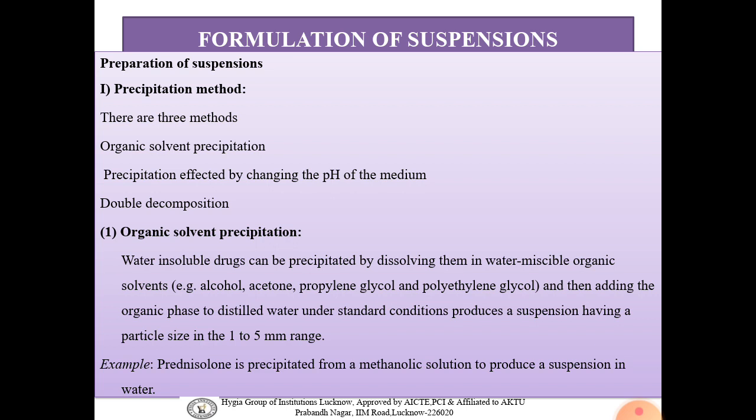Organic solvent precipitation: water-insoluble drugs can be precipitated by dissolving them in water-miscible organic solvents such as alcohol, acetone, propylene glycol, or polyethylene glycol. The organic phase is then added to distilled water under standard conditions to produce a suspension having particle size in the range of 1 to 5 microns. First we dissolve the water-insoluble drug in the organic solvent, then add it to distilled water to produce the suspension. For example, prednisolone is precipitated from a methanolic solution to produce a suspension in water.